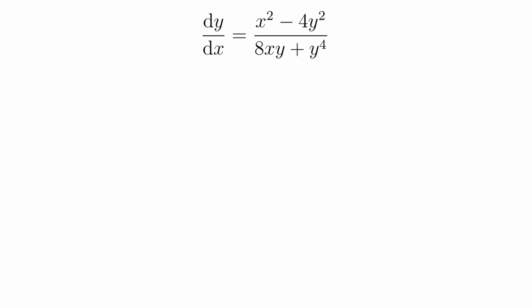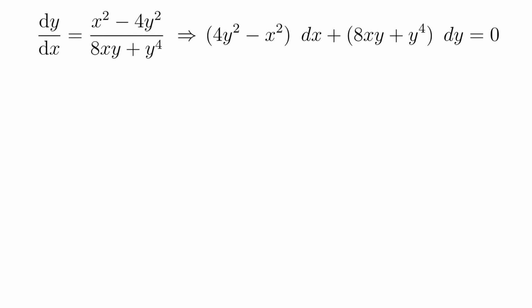We need to get it into our general form of an exact equation. We can clear the denominators and move everything to one side to get this. We can now identify our functions M and N. M(x,y) will be 4y² - x², and N(x,y) will be 8xy + y⁴.